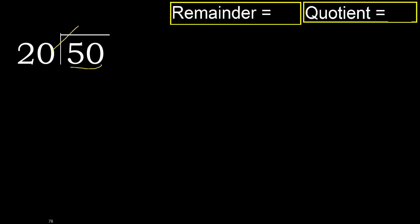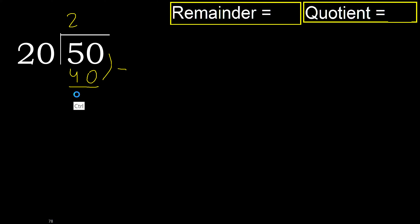20 multiplied by 3 equals 60 — 60 is greater. Multiplied by 2 equals 40 — 40 is not greater. Subtract: 50 minus 40 equals 10.